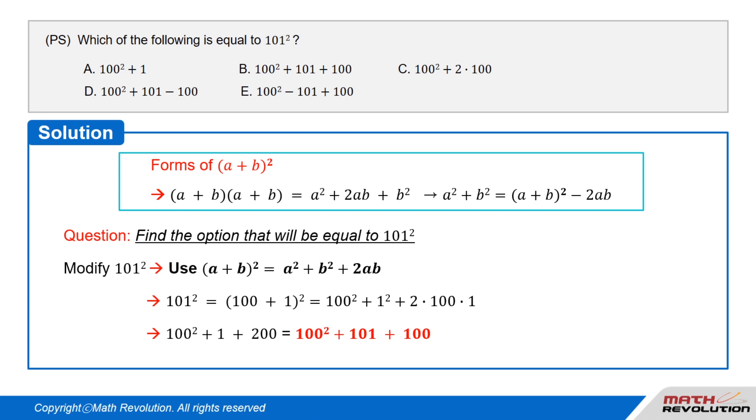101² = (100 + 1)² = 100² + 1² + 2 × 100 × 1.